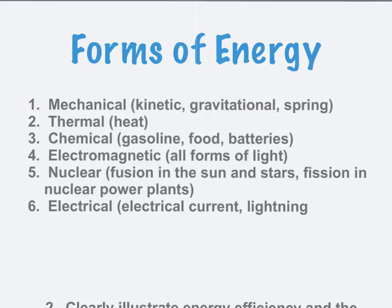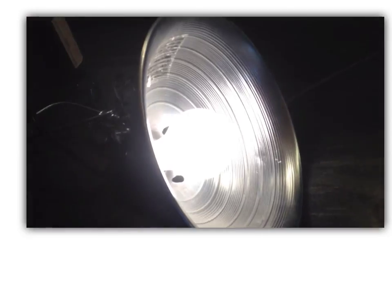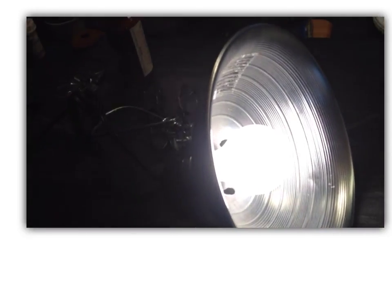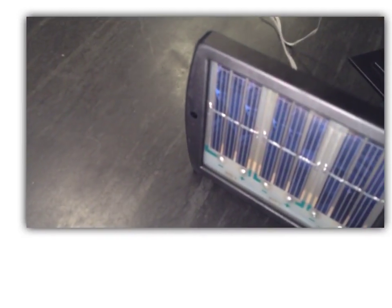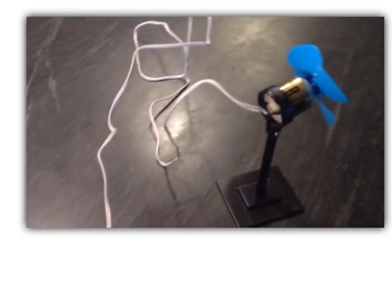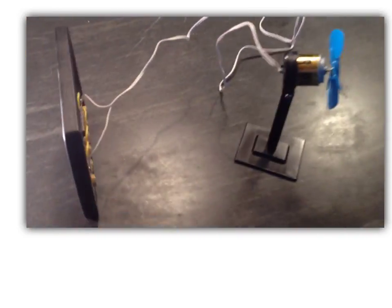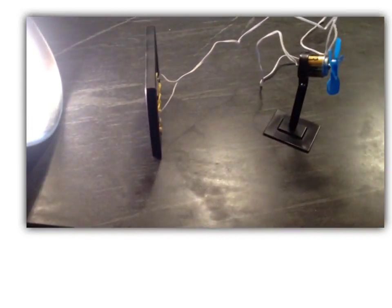Assuming familiarity with the various forms of energy, we are now going to make a Sankey diagram of a simple system. We have a light bulb, a solar panel, and a motor hooked up to a fan.